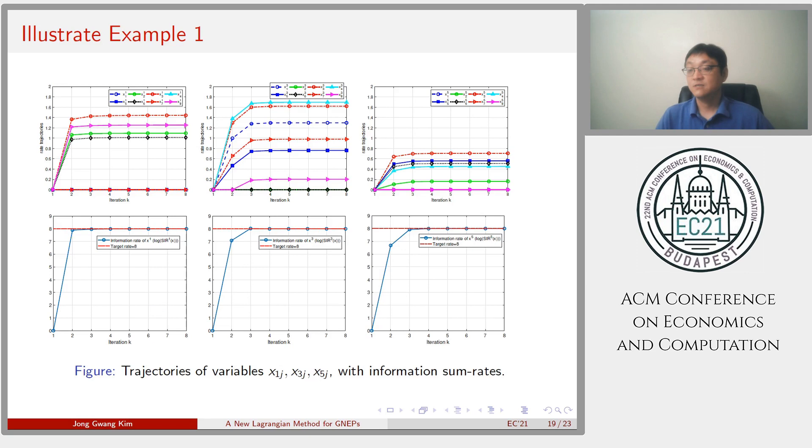Also, we see that the iterates of all converges to a limit point, satisfying the minimum target rates within significantly short CPU time. But I plotted the iterates of links 1, 3, 5 here.